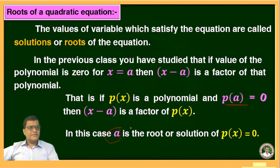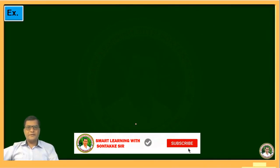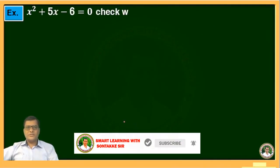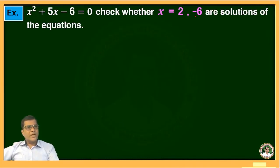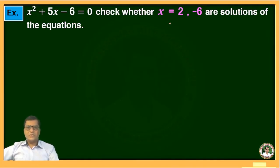In this chapter, this is nothing but the roots of the quadratic equation. Here we will see one example: x² + 5x − 6 = 0. Check whether x = 2 or x = −6 are solutions of the given equation. We will substitute each value — if LHS equals RHS, then that value is a root; otherwise it is not.